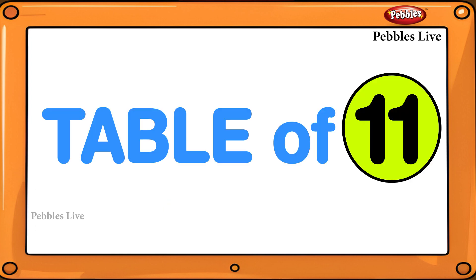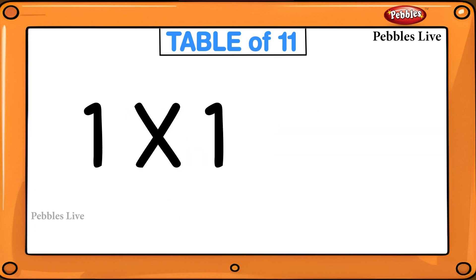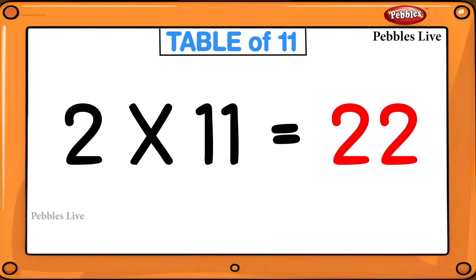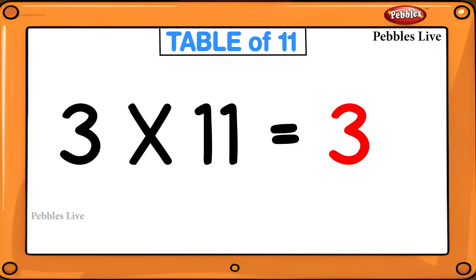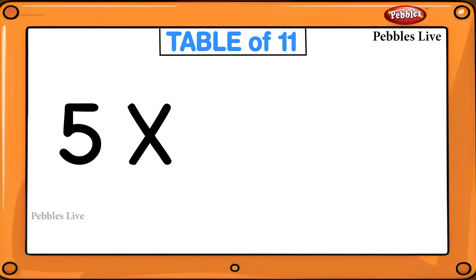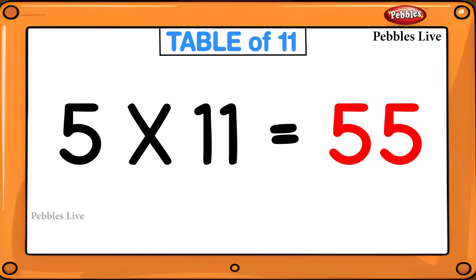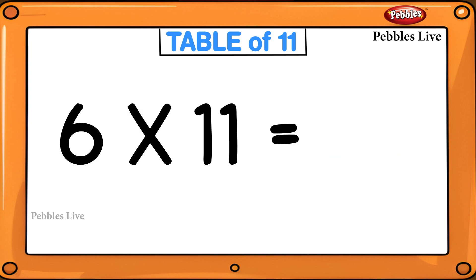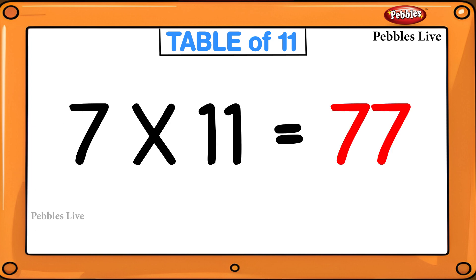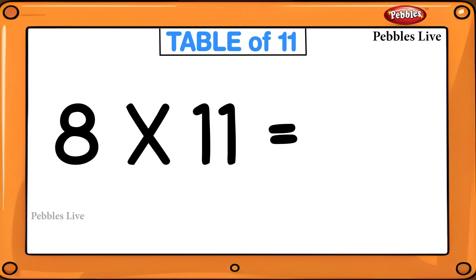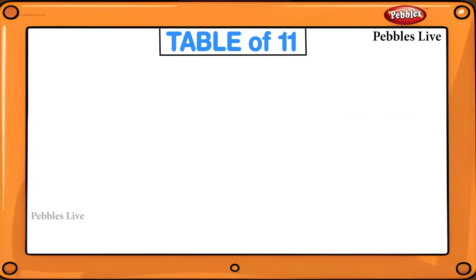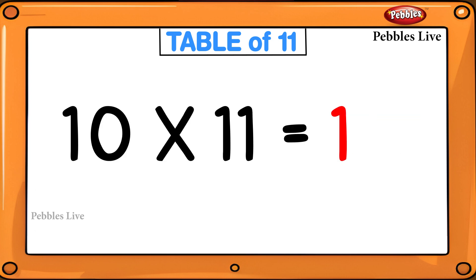Table of 11: 1 elevens are 11, 2 elevens are 22, 3 elevens are 33, 4 elevens are 44, 5 elevens are 55, 6 elevens are 66, 7 elevens are 77, 8 elevens are 88, 9 elevens are 99, 10 elevens are 110.